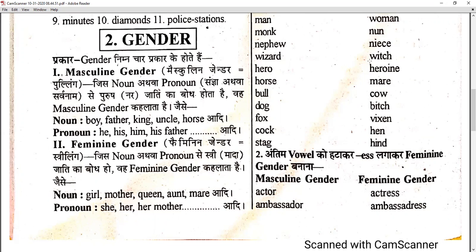We are going to cover our topic today, that is gender. Genders are basically of four types. We basically work with two mainly — masculine and feminine. The first gender is masculine gender.